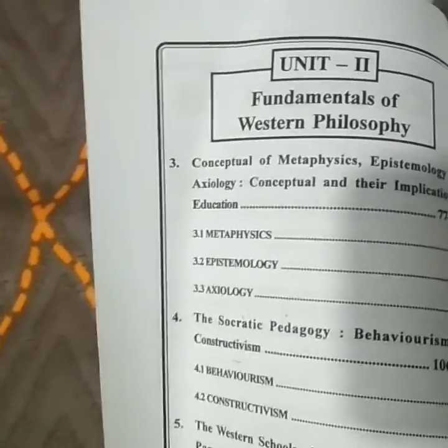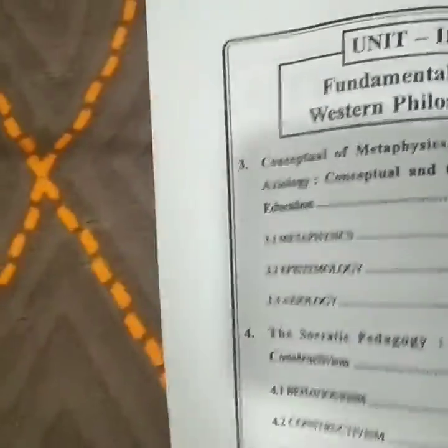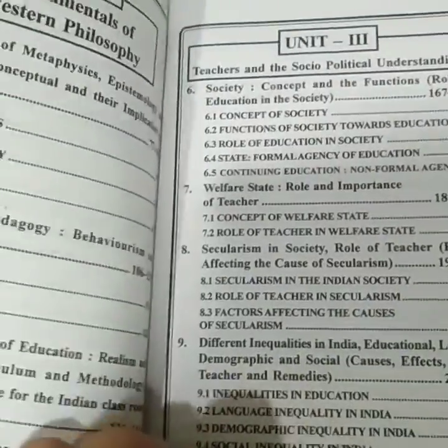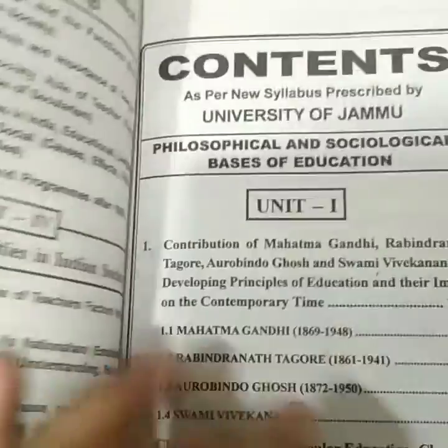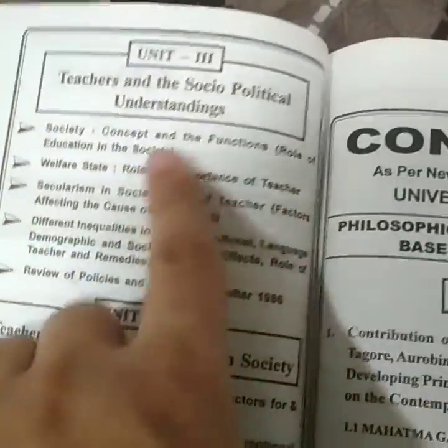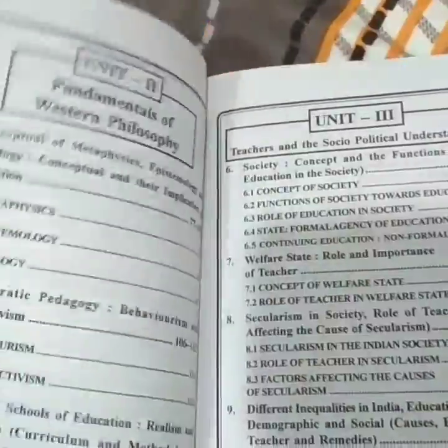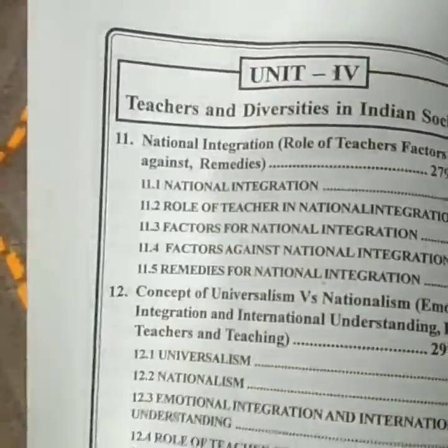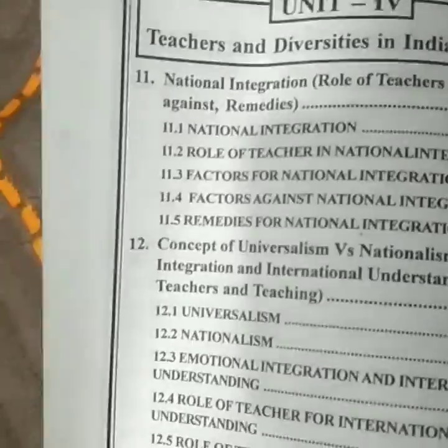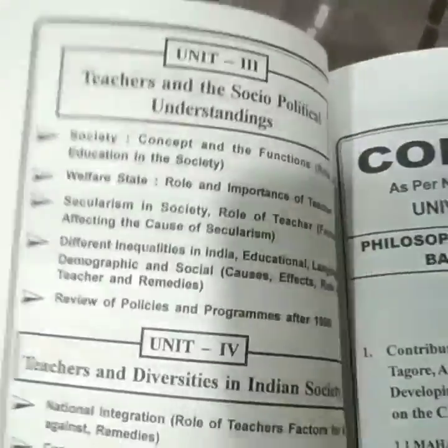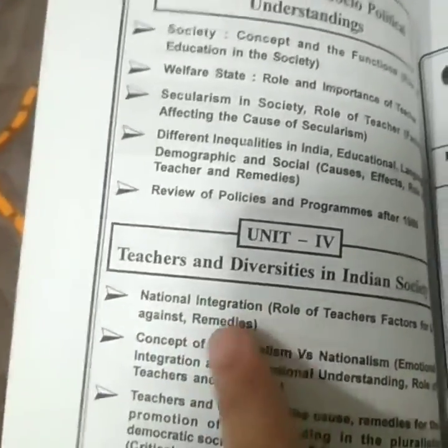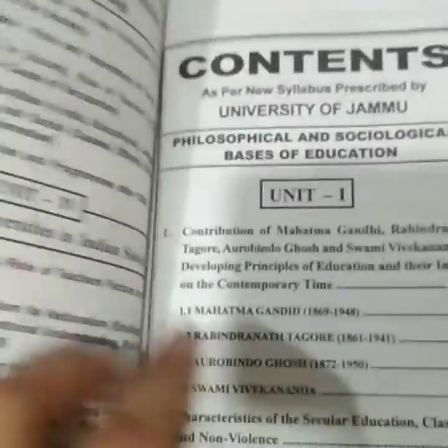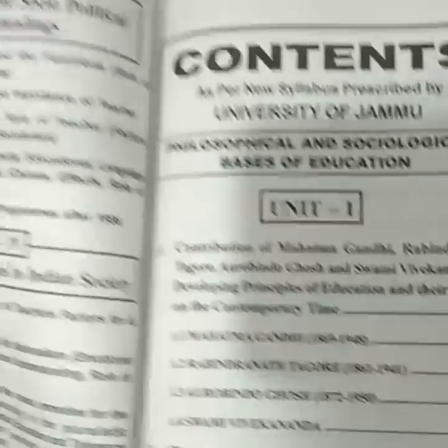In Unit 2, 'Fundamentals of Western Philosophy' and 'Conceptual Metaphysics' — same as in the syllabus. In Unit 3, 'Secularism in Society' is a topic, and in the syllabus also this topic was 'Secularism in Society.' In Unit 4, 'National Integration' and 'Concept of Universalism' — in the syllabus it was also 'National Integration' and 'Concept of Universalism.' So the contents cover everything that was there in the syllabus.